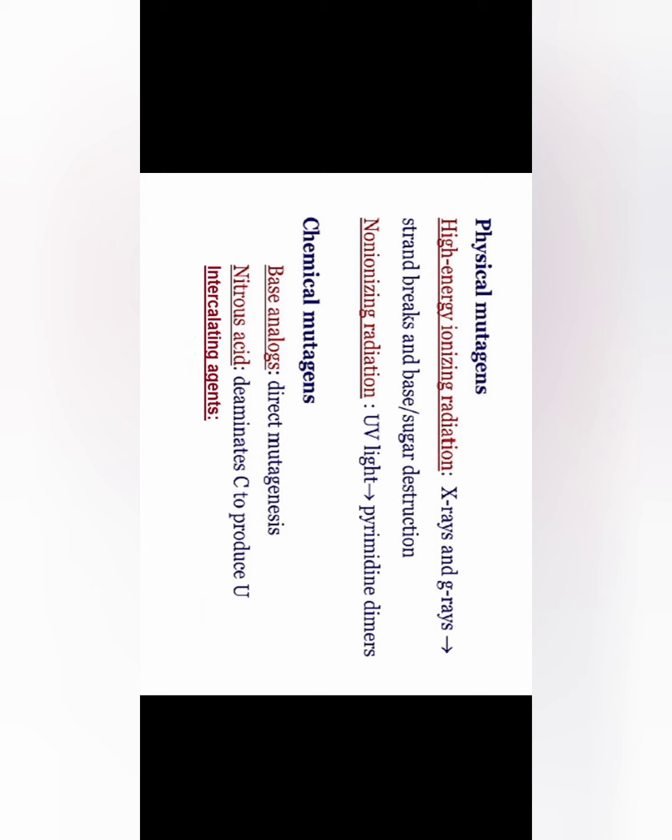Non-ionizing radiation, for example UV light, causes pyrimidine dimers. Bonds are normally formed between bases of two different strands, but UV light causes bond formation between two pyrimidines present in the same strand, not different strands. This will be described in detail later.